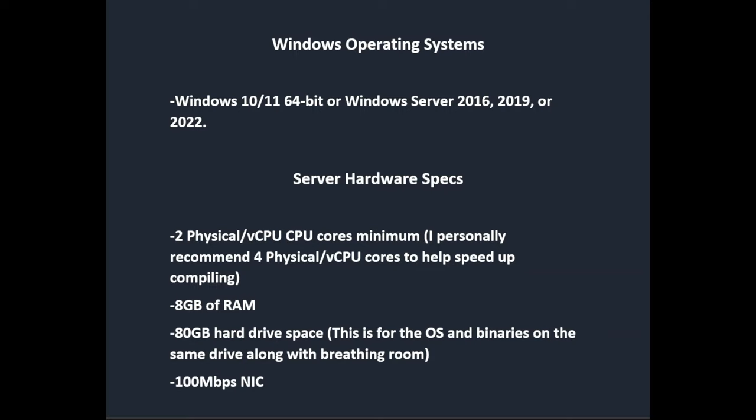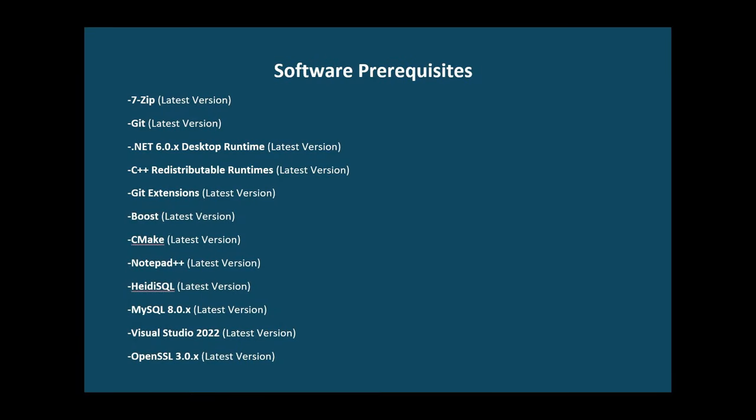Now we're going to cut over to the software prerequisites. For all these software packages, you can for the most part use the latest and greatest version you can find. You'll want: 7-Zip, Git, .NET 6.0 Desktop Runtime, C++ Redistributable Runtimes, Git Extensions, Boost, CMake, Notepad++, HeidiSQL or whichever SQL management application you prefer — but in this video we'll be using HeidiSQL — MySQL version 8, Visual Studio 2022, and OpenSSL 3.0.